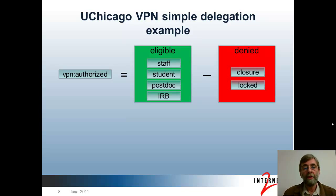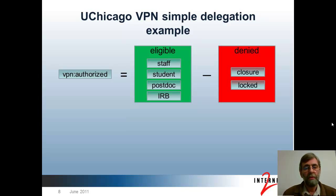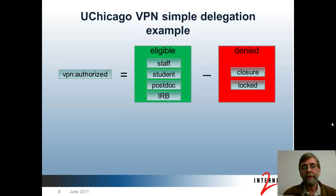So our VPN — virtual private network — has increasingly sophisticated access management policies over time. We've exceeded the capacity of our VPN technology and must use something sophisticated and outboard, like Grouper, to manage it. The VPN system itself looks at a single LDAP attribute called VPN authorized, which is pushed out by Grouper. Grouper computes this based on a number of groups: membership in any one of them makes you eligible for VPN service, but there are also exceptions that can deny your access even if you're otherwise eligible.